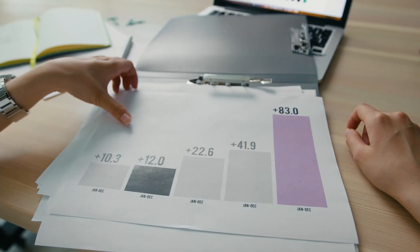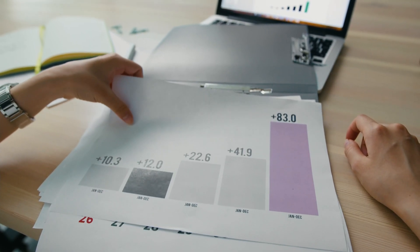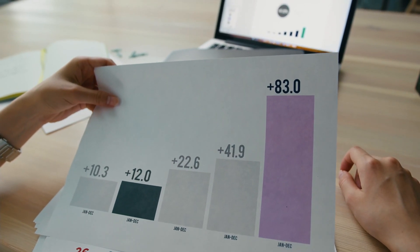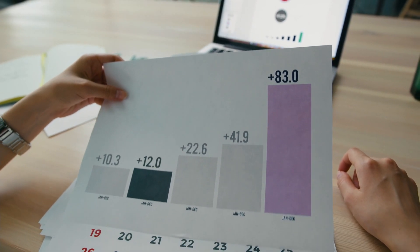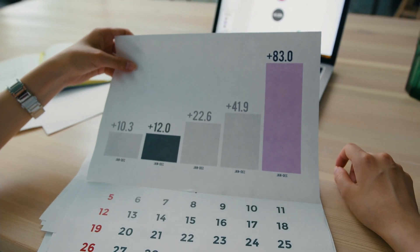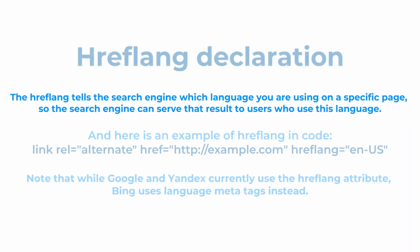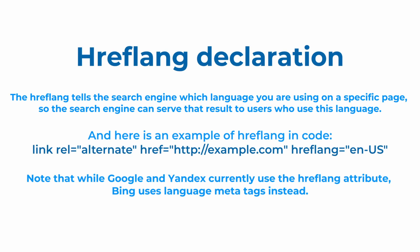This will influence your bounce rate by making sure that the right audience lands on the right version of your page. Keep in mind that while Google and Yandex currently use the hreflang attribute, search engine Bing uses language metatags.